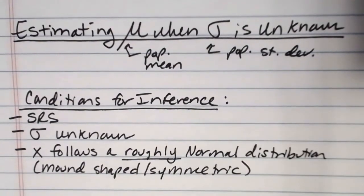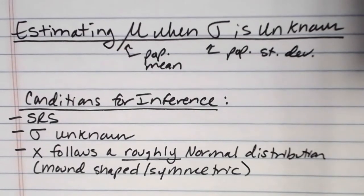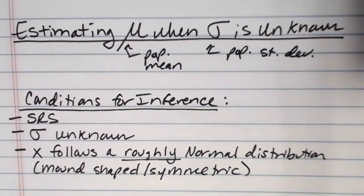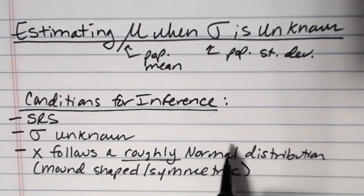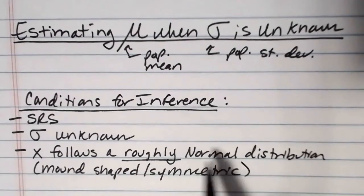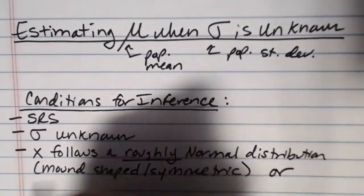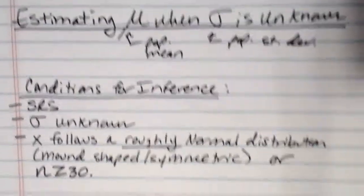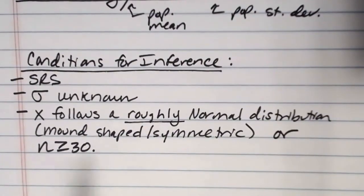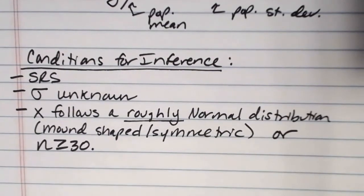It doesn't have to be precisely normal or super close to normal because the distribution that we use to calculate the confidence interval for mu when sigma is unknown is actually called the t distribution. And it's not as strict as the normal. It's still mound-shaped and symmetric but it doesn't have the same strict criteria that the normal distribution does. So x needs to follow a roughly normal distribution or just be mound-shaped and symmetric or we've got to have those sample sizes of 30 or more. If we have large enough sample sizes we don't even need to worry about this.